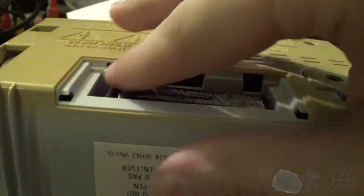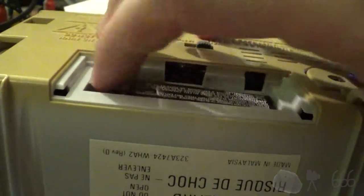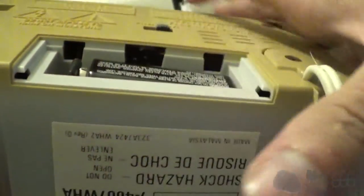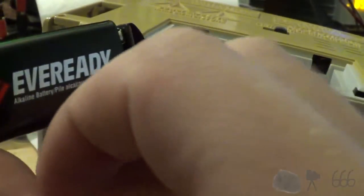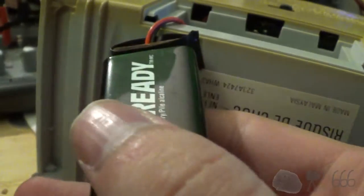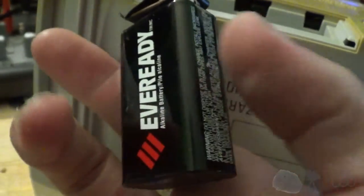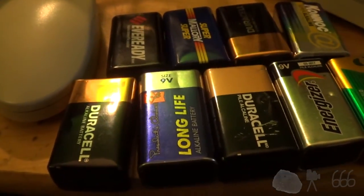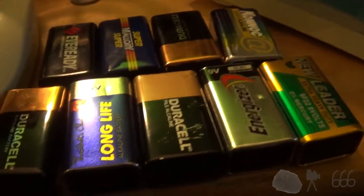But something interesting that it came with is this - an older style Eveready battery. Look at that. I think they're gold and black nowadays. But this is old school. It's old school enough that I believe it doesn't actually have an expiry date on it. Makes an interesting addition to my collection of dead batteries.